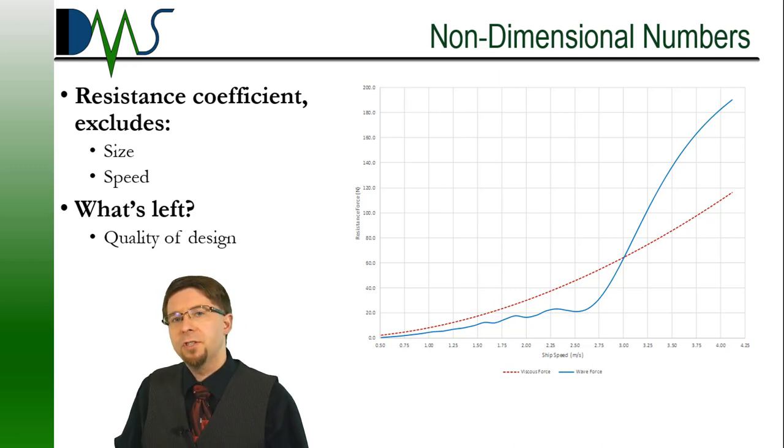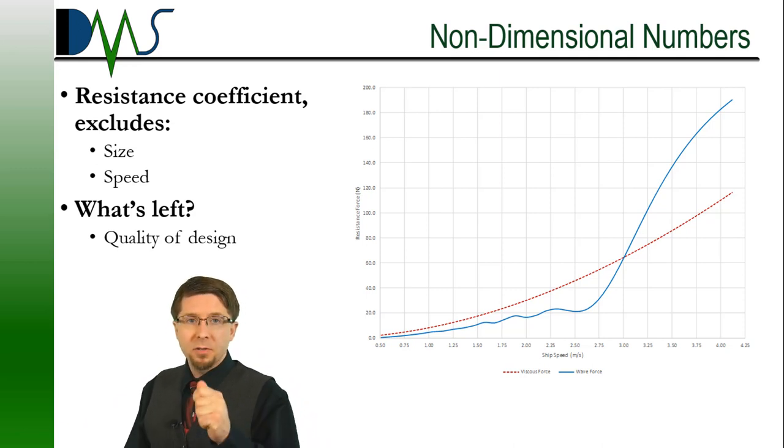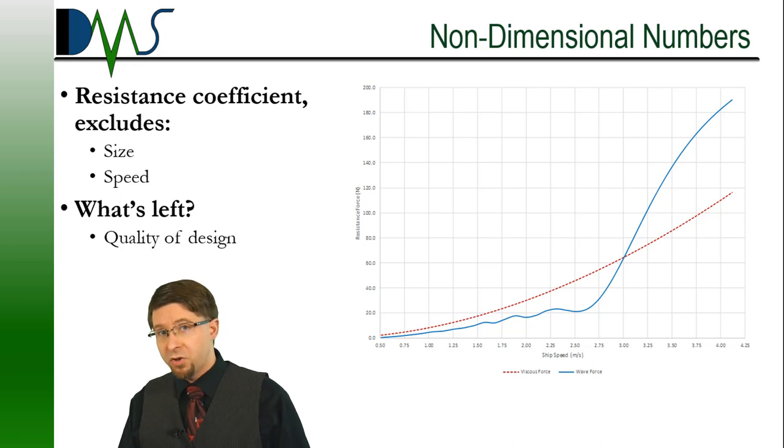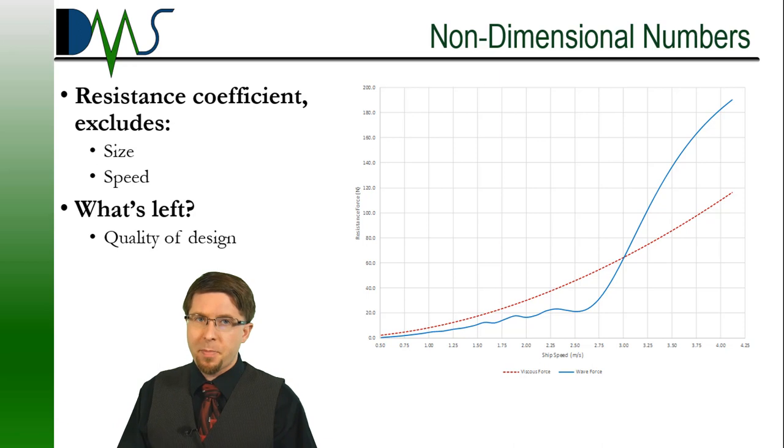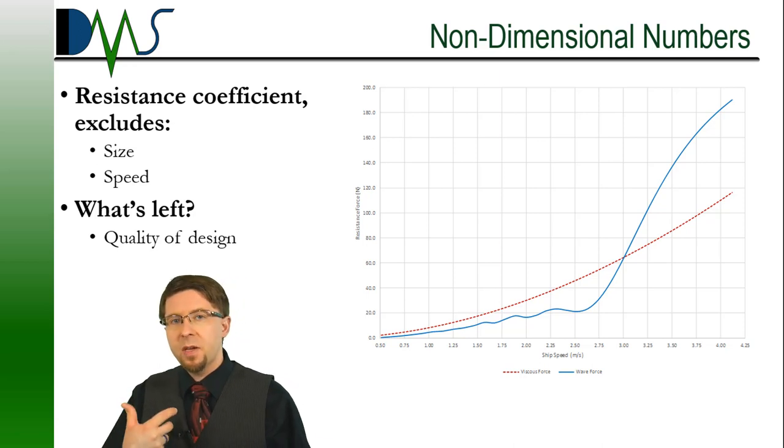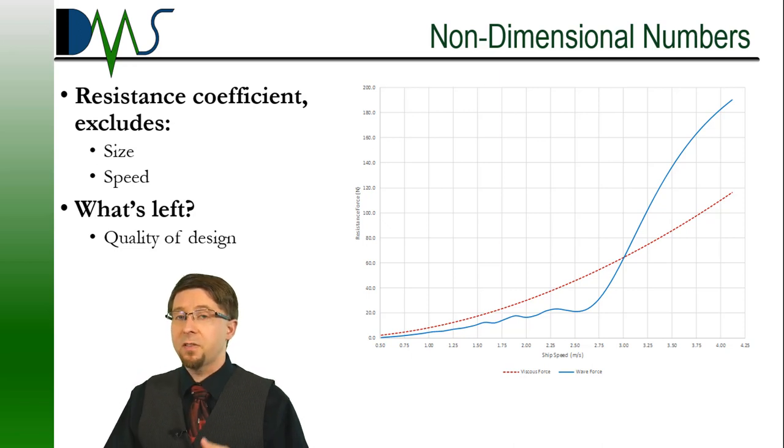Non-dimensional coefficients are math formulas that are used to reformat experimental data. They can take the raw force of resistance and factor out ship size and speed. Also important is that this works at both model scale and ship scale. Remember that, we're going to come back to it later. But for the moment, let's stick to why would you even want to do this? Well, reformatting the raw data into these coefficients helps us clarify patterns and it allows us to make meaningful comparisons between different ships because we've now factored out the size and the speed component.